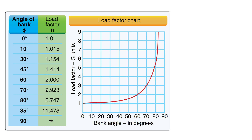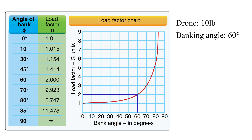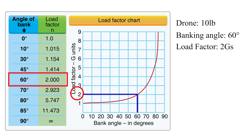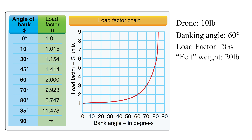Here's a chart that shows how load factor changes with the banking angle. Suppose we have a drone with a weight of 10 pounds. Looking at the chart, we see that the load factor at 60 degrees banking turn is equal to 2G. This means that the aircraft will feel 2 times heavier, or 20 pounds. To maintain the same altitude, the aircraft's wings must produce a lift capable of handling at least 20 pounds. We can see that the load factor grows exponentially at some point. At an 80 degrees banking turn, the aircraft will experience a load factor of a whopping 5.75 Gs.